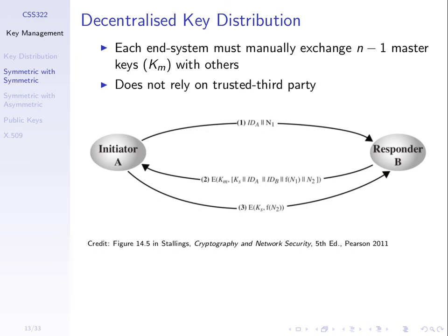The aim is that the session key is only used for a short period before it's changed, and the master key is not used very often — only during these three steps. Every five minutes we use the master key once. The advantage of this decentralized approach is that the two entities A and B do it between each other without relying on a third party. The problem is the number of master keys that need to be manually exchanged.